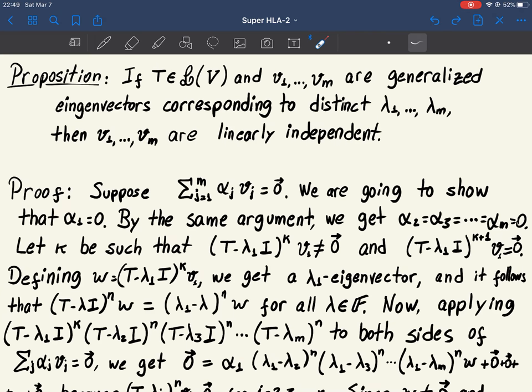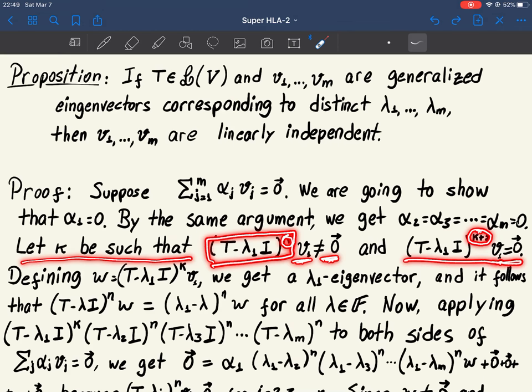So that's exactly what we're going to do. We're going to take k such that T minus lambda I to the power k applied to v1 is still not zero, but as we go from k to k plus 1, then just at this time, we're going to get zero, when we apply to this vector v1. So just before it was zero, let's call this vector here w. So w will be very important in our argument.